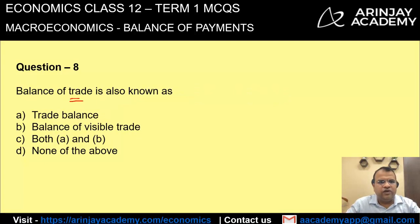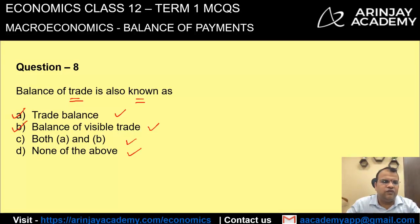Balance of trade is also known as 'trade balance' and 'balance of visible trade.' Both options A and B are correct, and therefore the answer to this question is C.